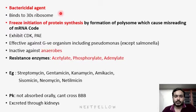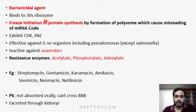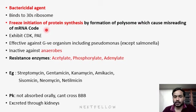Aminoglycoside is a bactericidal agent. It binds to the 30S ribosome and inhibits protein synthesis, mainly the initiation process, by formation of polysomes which cause misreading of the mRNA code, thereby inhibiting initiation of protein synthesis.